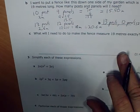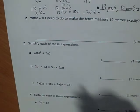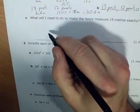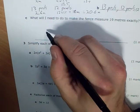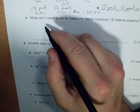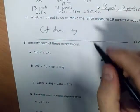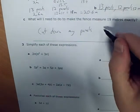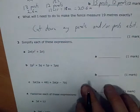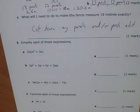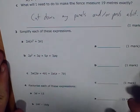It's a very challenging question, I know. So what will I need to do to make my fence measure 19 metres exactly? I'll need to cut down my panel or posts, and or posts. That was really a very challenging question, and any of you that scored marks on that have done very well indeed.